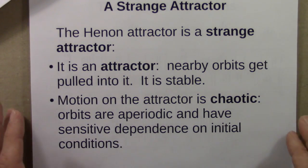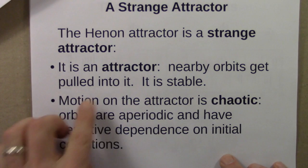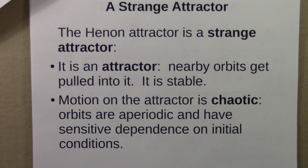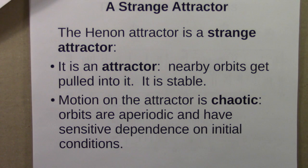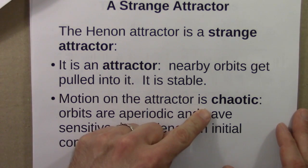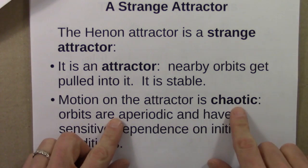So what is a strange attractor? Well, it's two things. It's an attractor — nearby orbits get pulled into it; it's stable. If you're on the attractor and you get bumped off a bit, you get pulled back. However, for strange attractors, motion on the attractor is chaotic, meaning orbits are aperiodic and have sensitive dependence on initial conditions. So it is an attractor that is itself chaotic — an attracting chaotic orbit.